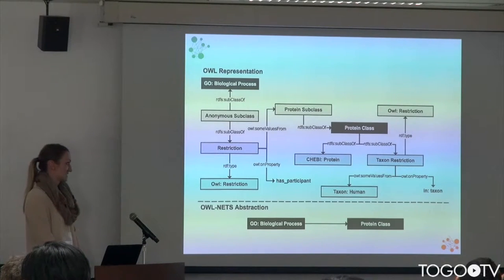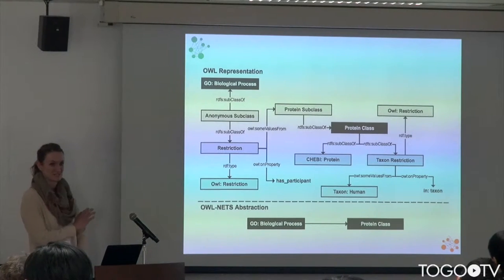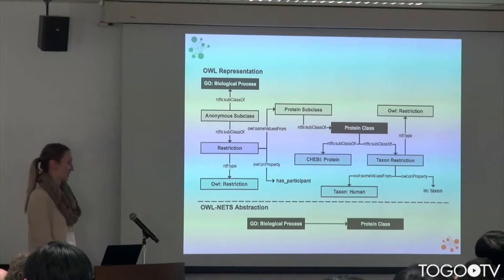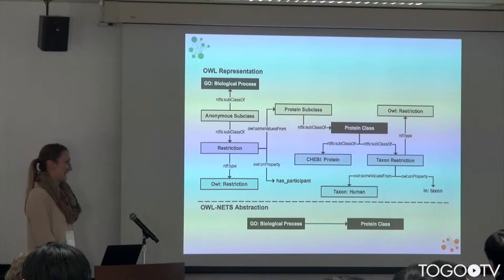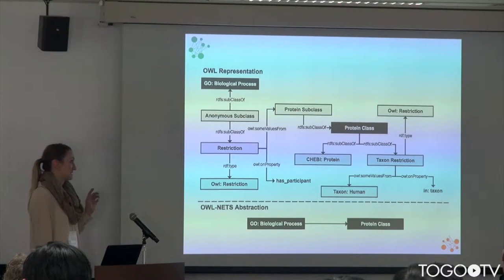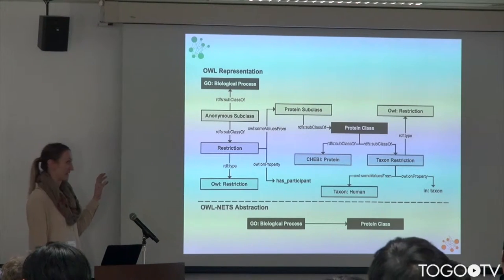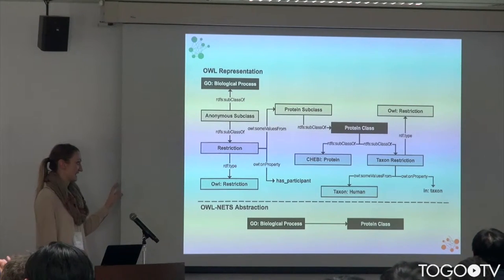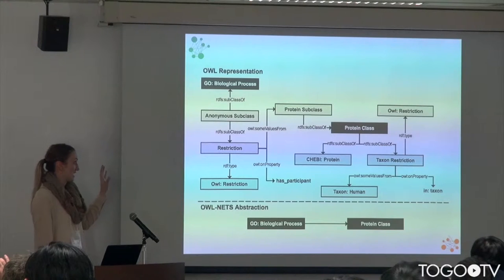This is just meant to show at a very high level what this method does. On top is an example looking at human proteins that participate in some biological process — this would be the way that you would model this with OWL. And what my method does is it takes this sort of representation where the biologist may only really be interested in what we've shown in the dark nodes.